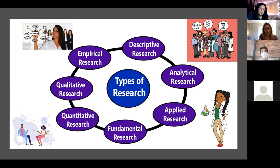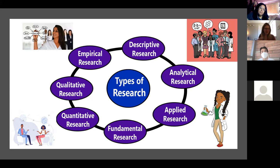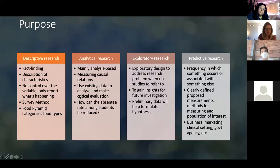What I found when looking at all these different types of research is that they are categorized, but a lot of them overlap — one area of research employs many of the others. We have descriptive research — fact-finding, very observational, like the food pyramid categorizing food types. We have analytical research — analyzing existing data and making a critical evaluation. We have exploratory research — almost like preliminary research that helps formulate a hypothesis. And predictive research — more targeted toward business or marketing.